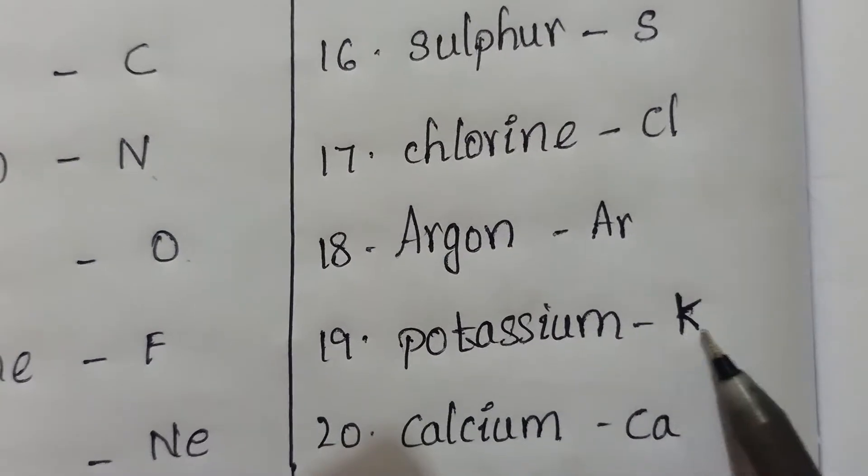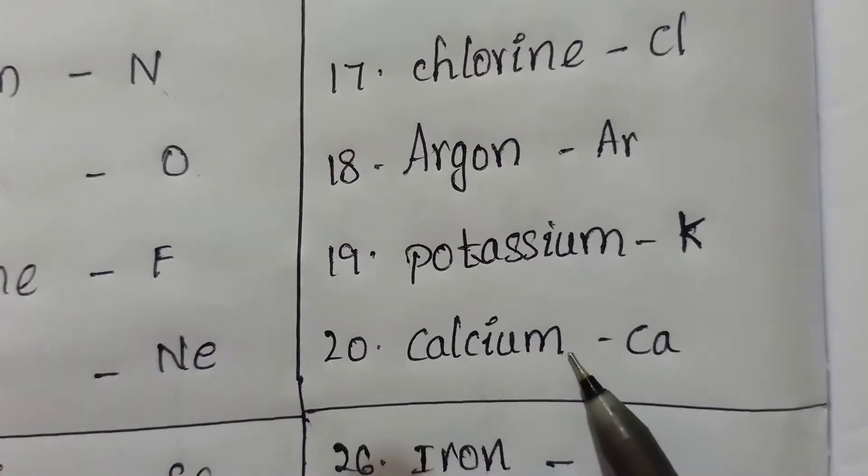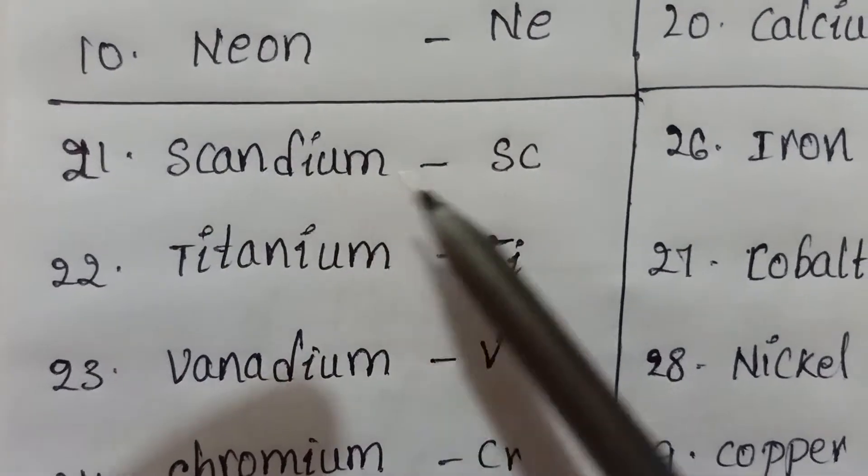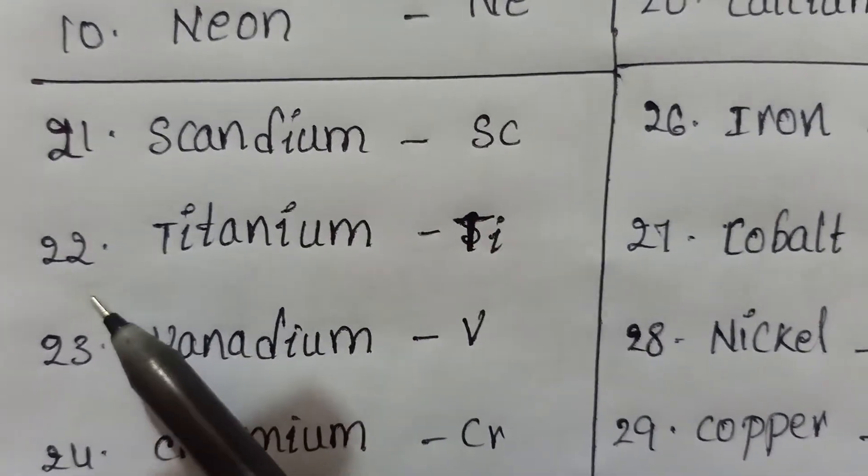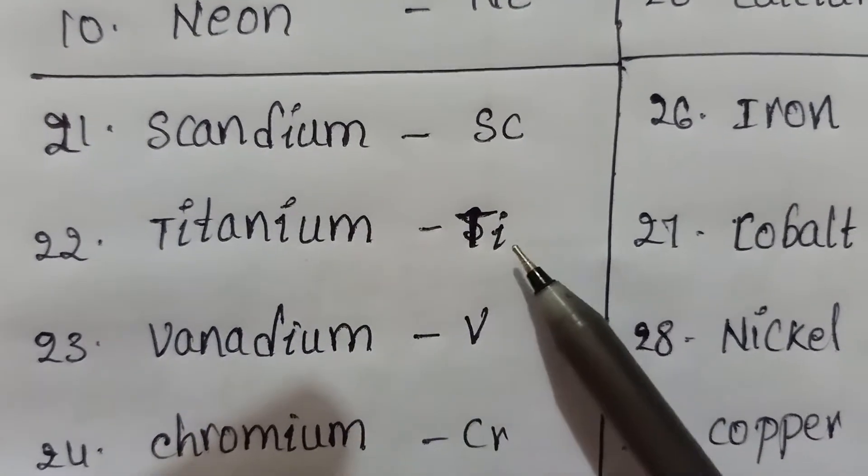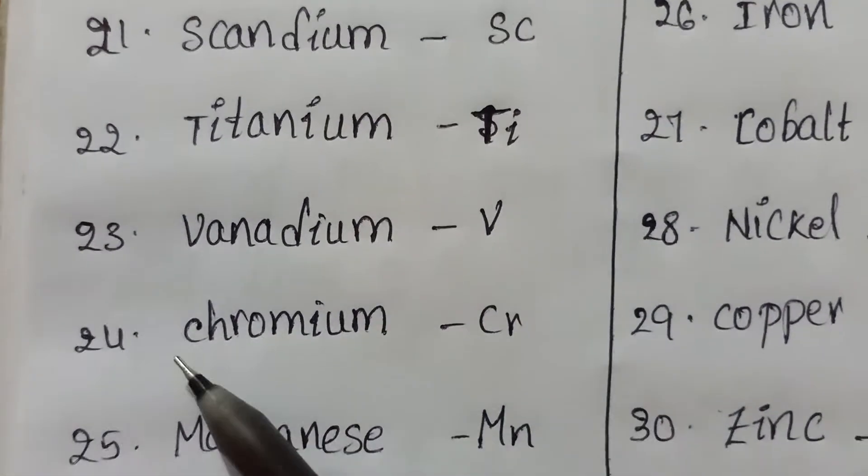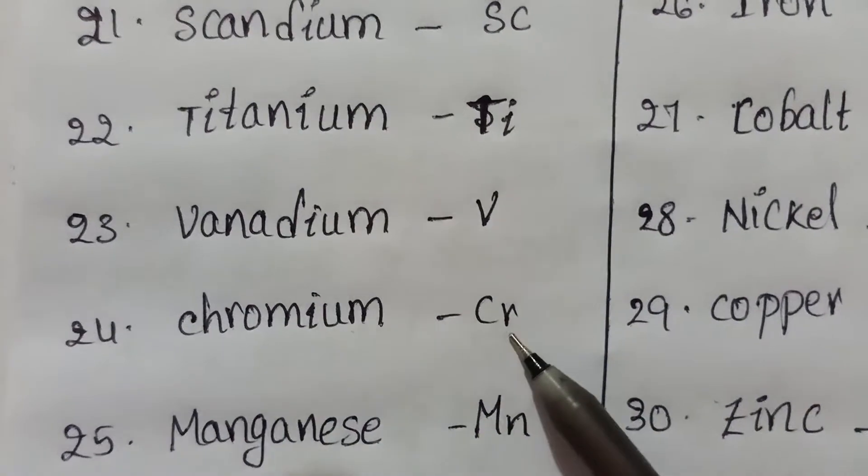Nineteenth one, potassium, symbol K. Twentieth, calcium, symbol CA. Twenty-one, scandium, symbol SC. Twenty-two, titanium, symbol TI. Twenty-third, vanadium, symbol V. Twenty-fourth, chromium, symbol CR.